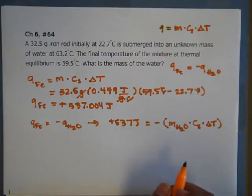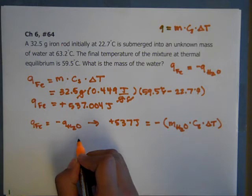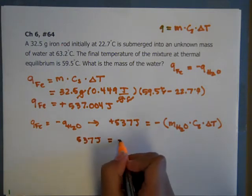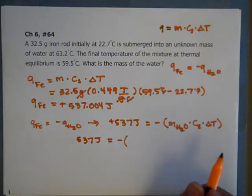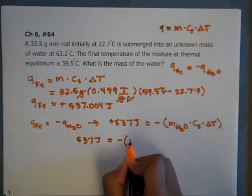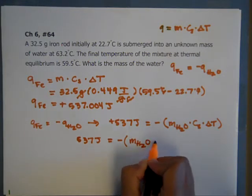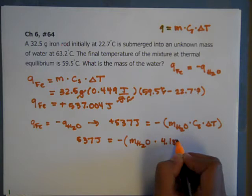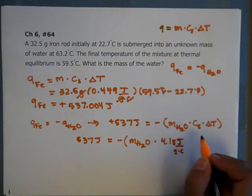So we're going to plug in. We're going to leave the 537 joules. And our mass of water is what we're looking for. What is our specific heat of water? It's good to remember this number. It's 4.18 joules per gram Celsius. It's good to remember water, 4.18. It's in the table as well.